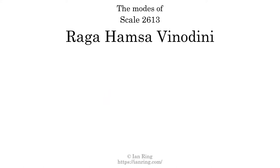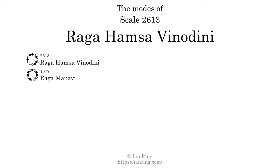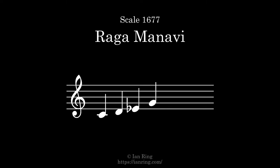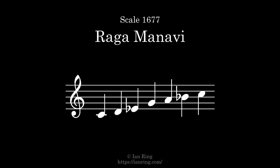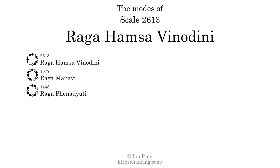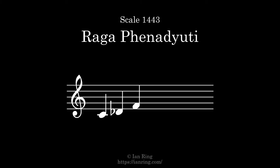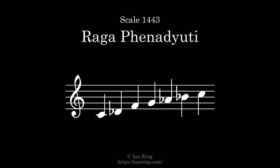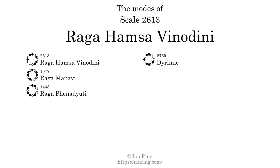This scale has 6 modes. The first mode is itself. The second mode is scale 1677, also known as Raga Manavi. The third mode is scale 1443, also known as Raga Fenodayuti. The fourth mode is scale 2769, also known as Deremic.